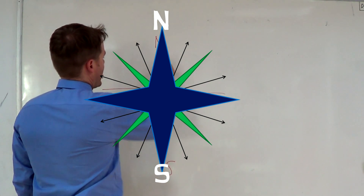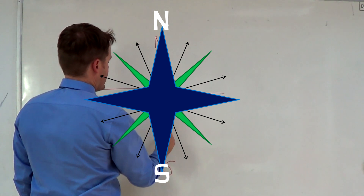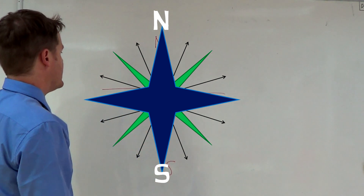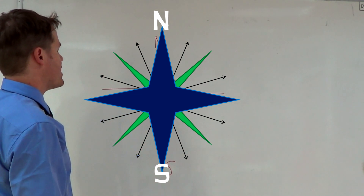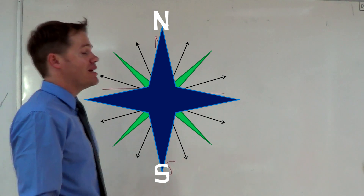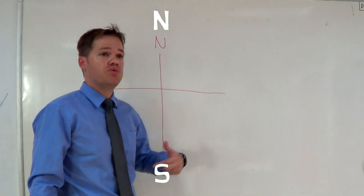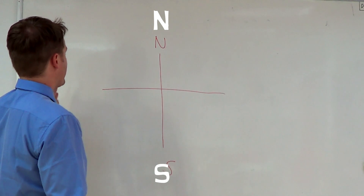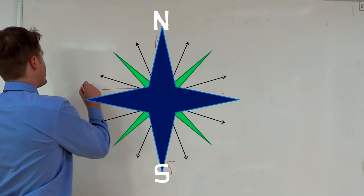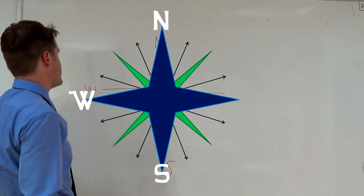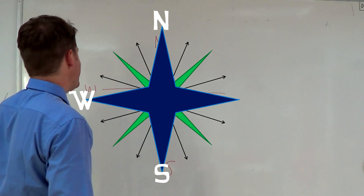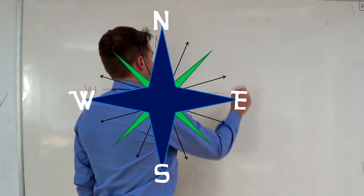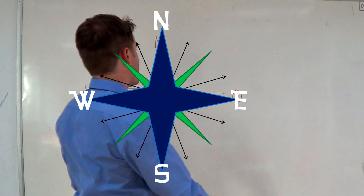Now we need to know what we have on the left hand side and the right hand side of the compass. Even adults get this one mixed up, so what I normally do to help me remember is to say west is on the left hand side. West and left both have the same letter 'e' in them. So then we only need to put east here on the right hand side.